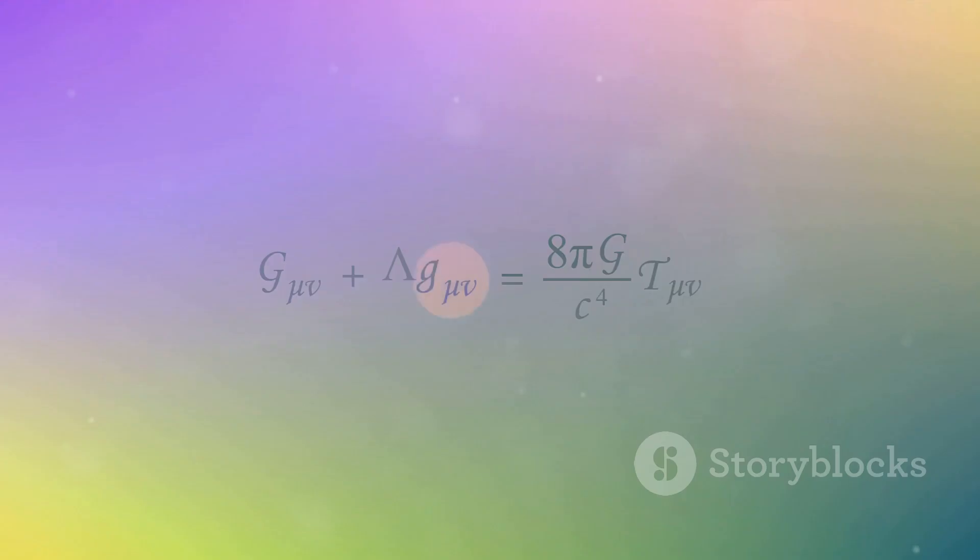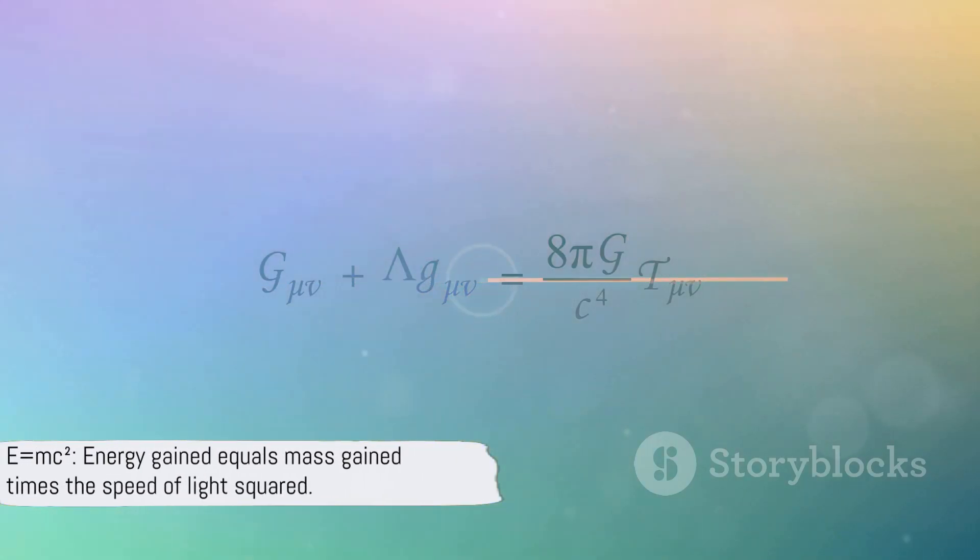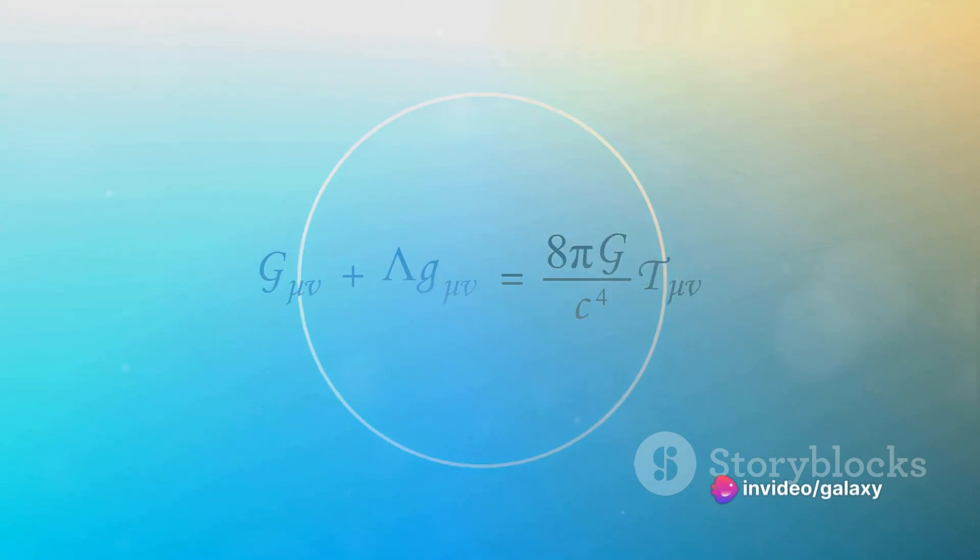E equals mc2. Therefore, the proof shows that energy gained is indeed equal to mass gained times the speed of light squared.